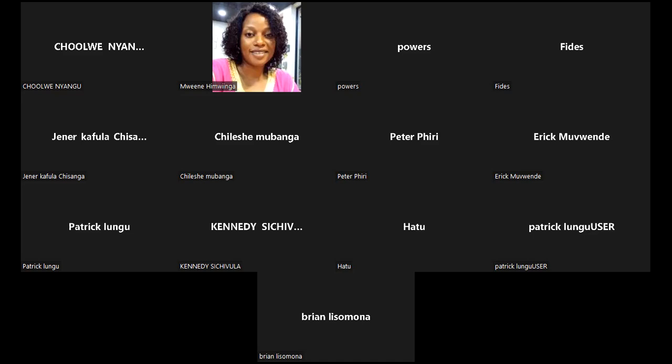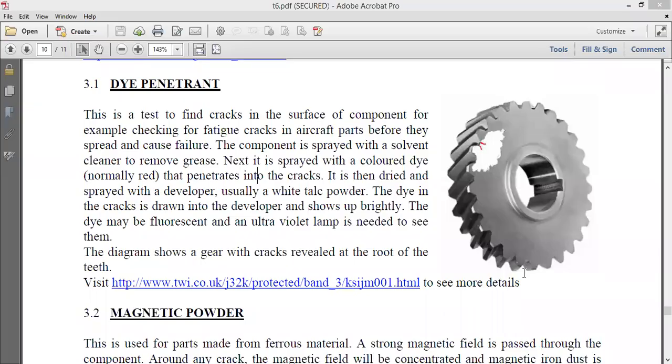What you do is spray the component with a solvent cleaner to remove the grease. The next thing is you spray it with a colored dye - usually red dye. And this dye will penetrate into the cracks. Then when that dye dries up, you spray it with a developer. We use white talc powder to spray across that same area where we have the dye.